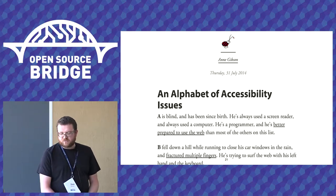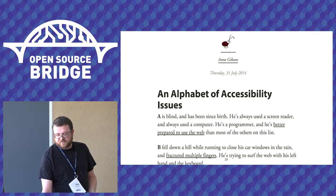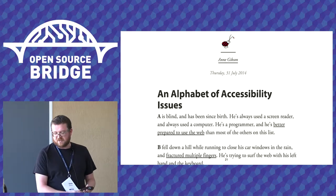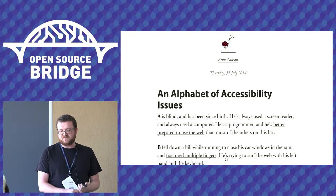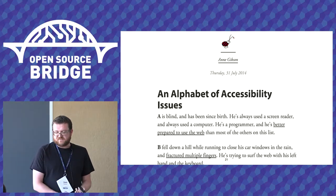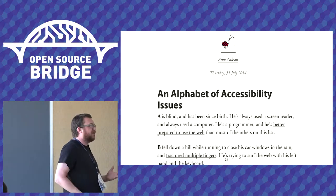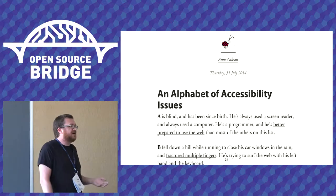Here are a few of the 26 people she mentions: B fell down a hill while running to close his car windows in the rain and fractured multiple fingers — he's trying to surf the web with his left hand on the keyboard. G was diagnosed with dyslexia at an early age and prefers books because they tend to have better text and spacing. H is a fluent English speaker but hasn't been in America long and is frequently tripped up by American cultural idioms. Jay doesn't know he's developed an astigmatism, but zooms his browser to 150% after 7pm. Zed has twins under the age of one and navigates his iPad with one or two fingers.